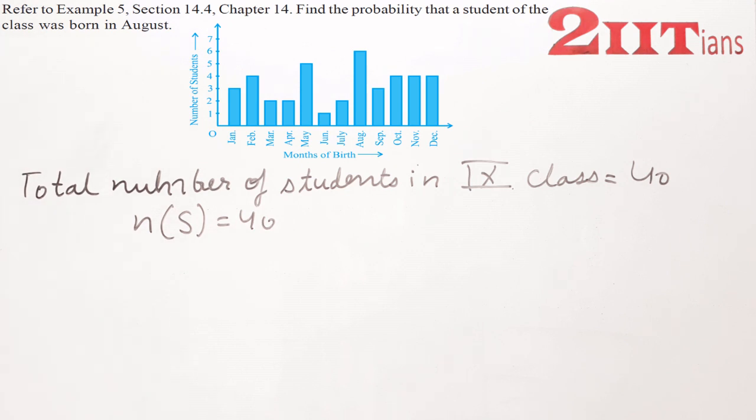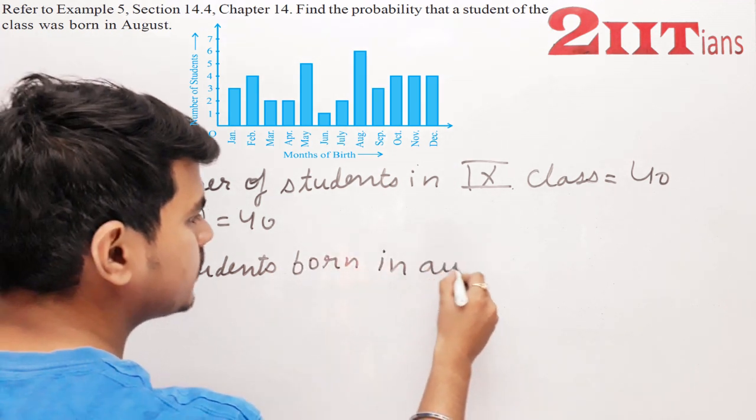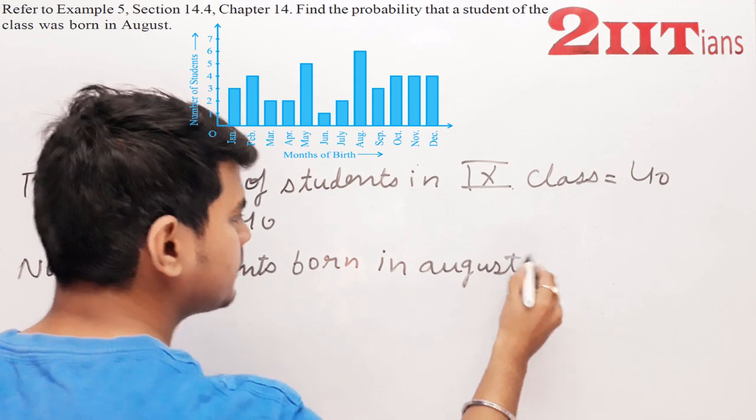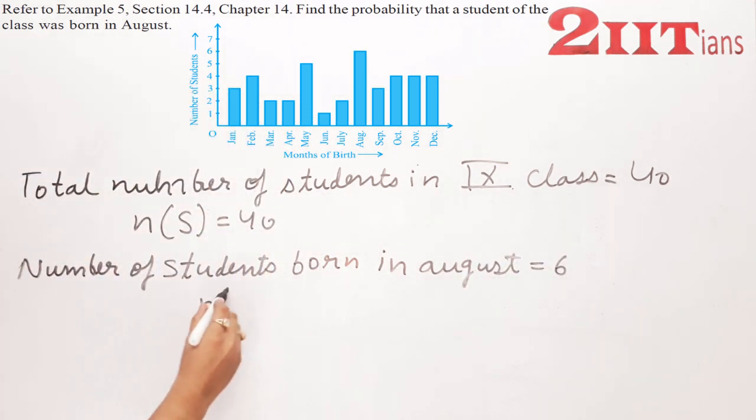Now for August, how many students were born in August? Number of students born in August: n(E) = 6.